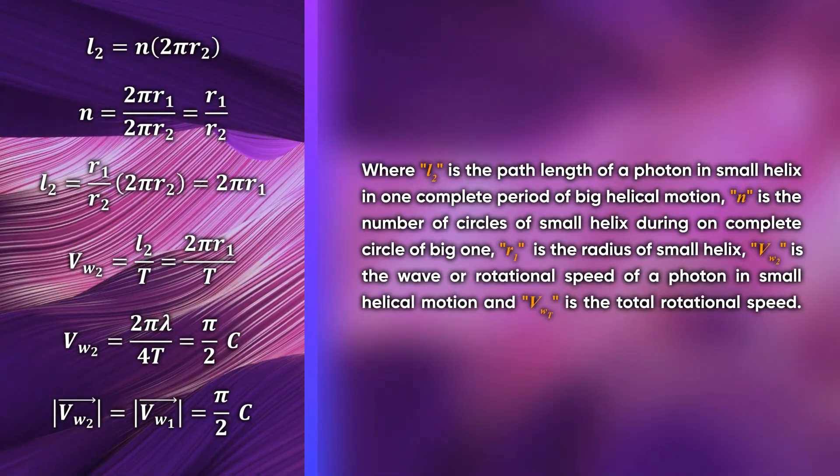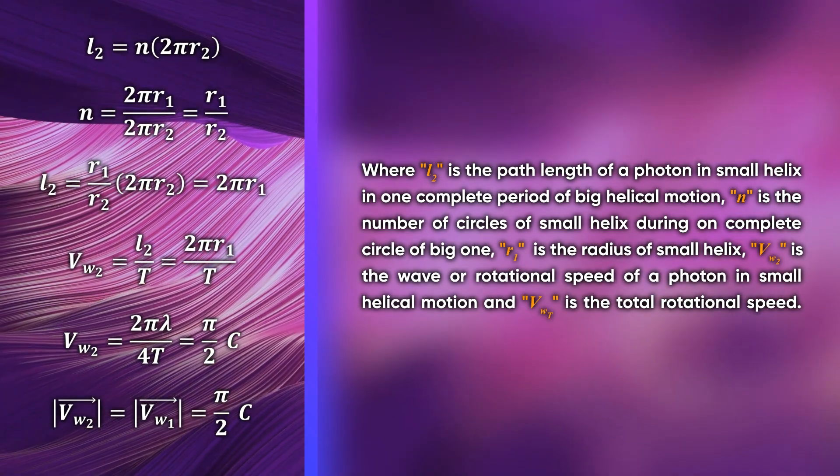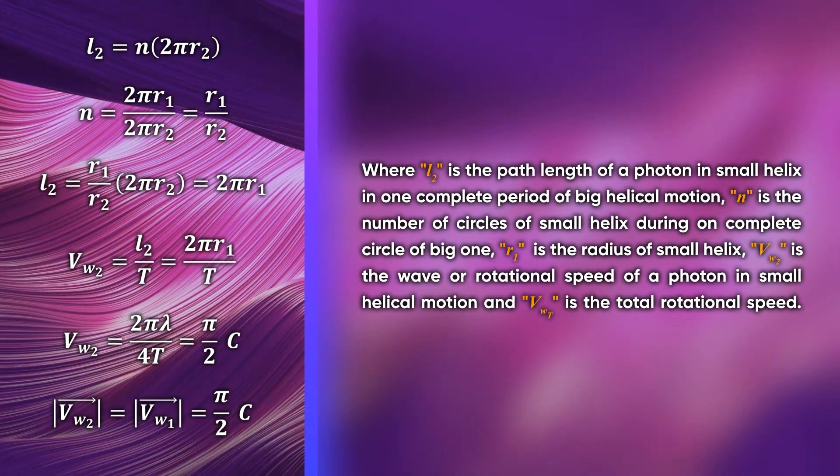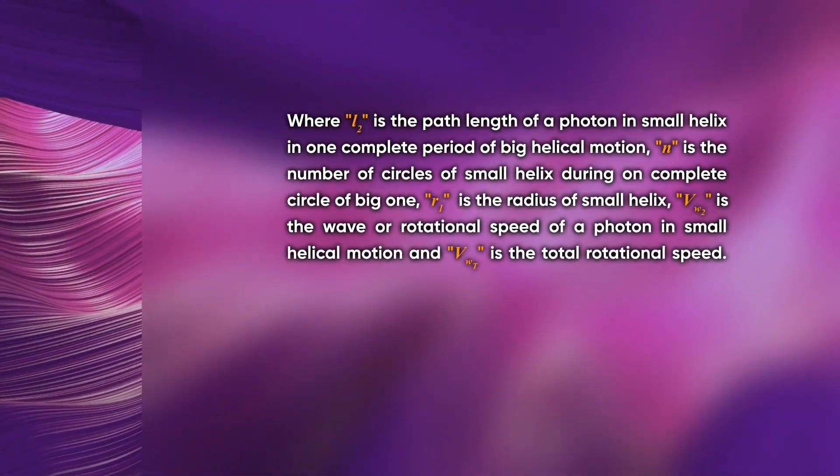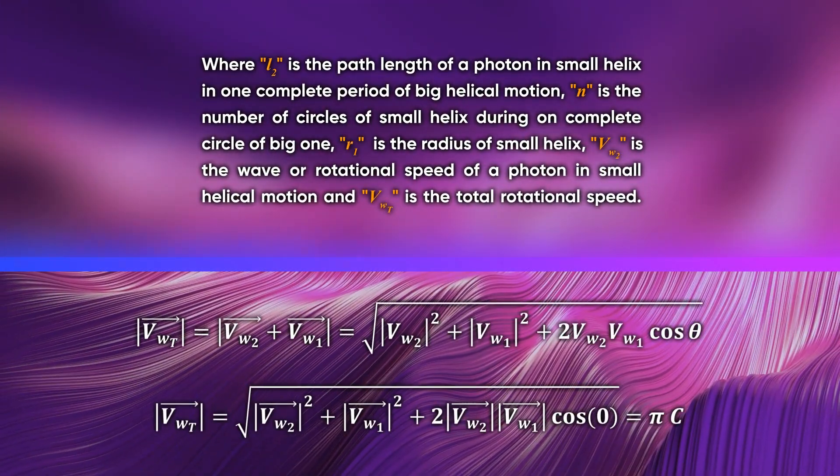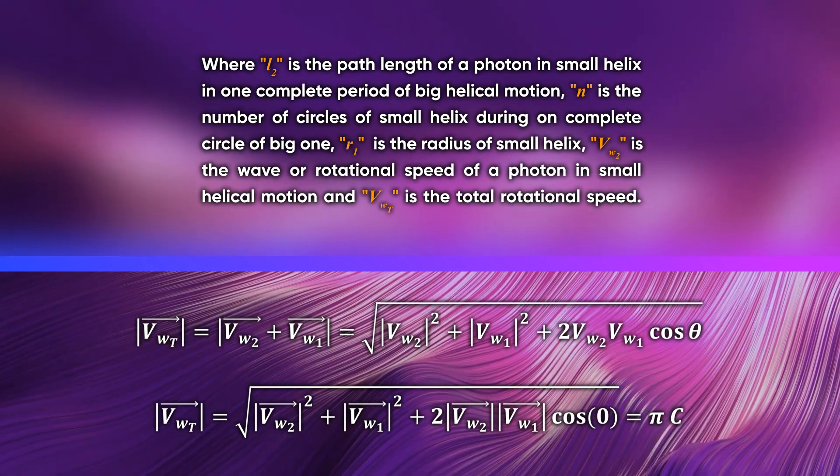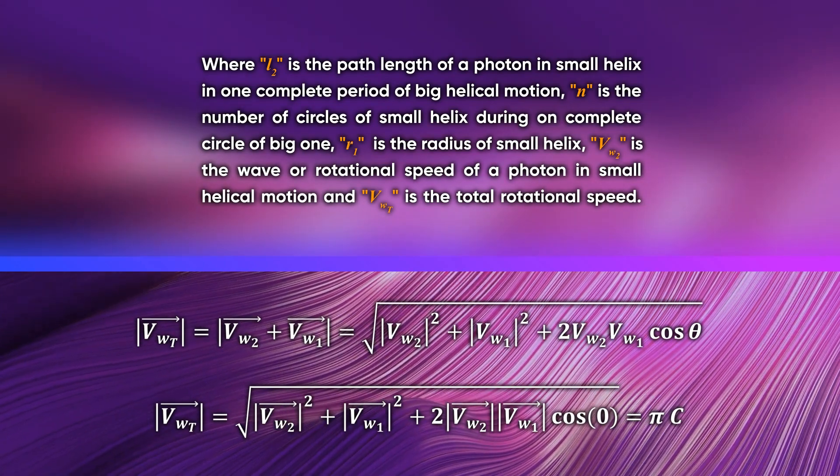Where L2 is the path length of a photon in a small helix in one complete period of big helical motion, n is the number of circles of small helix during one complete circle of big one, r1 is the radius of a small helix, v_w2 is the wave or rotational speed of a photon in a small helical motion, and v_wt is the total rotational speed.